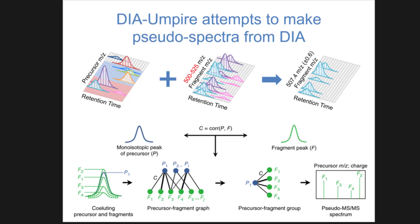This approach doesn't use a spectrum library at all — you're basically making pseudo-DDA-like spectra from your DIA data and then searching it with a normal search engine, so it doesn't require a library. You could just use Mascot, Sequest, X!Tandem, or whatever you would normally use for DDA. It works fairly well as a strategy. The one major caveat is that it requires a precursor that is associated with your fragments. We find that this approach, while it does work, is usually less sensitive than if you don't require a precursor signal.